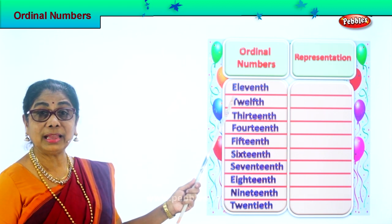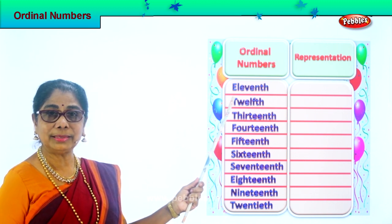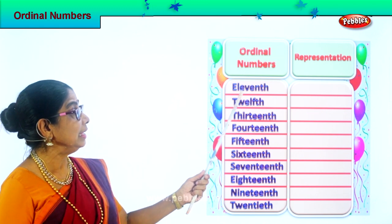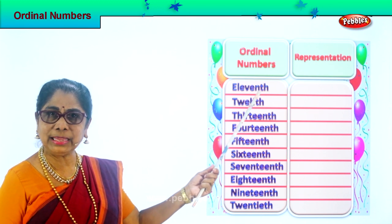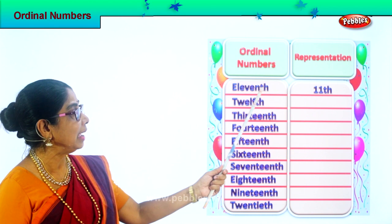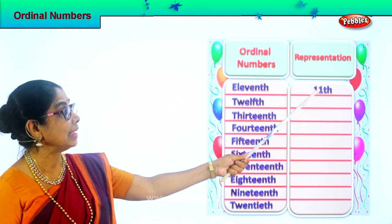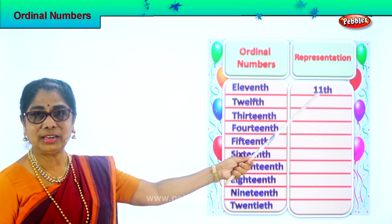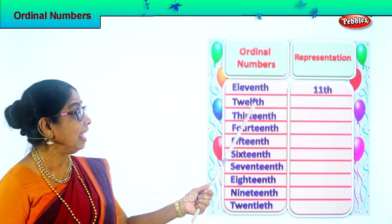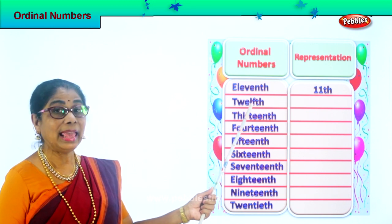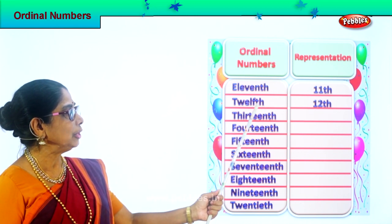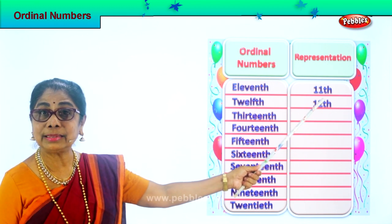This is 11th. The teacher will ask the 11th child to come. Spell eleventh: E-L-E-V-E-N-T-H. 11th. How do you represent 11th? Write number 11 and write TH at the side: 11th. Let's take the next — 12th: T-W-E-L-F-T-H. 12th. How do you represent 12th? You put number 12 and write TH at the side: 12th.